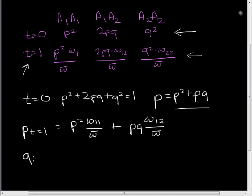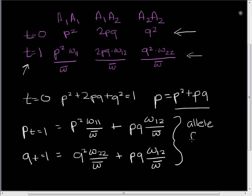Likewise, we're going to see the same thing for q. q at t equals one is just going to equal q squared times the fitness for our q individuals divided by the average fitness for our population, plus pq times the fitness for pq individuals divided by the average fitness for the whole population. And this is how we get our allele frequencies for time equals one.